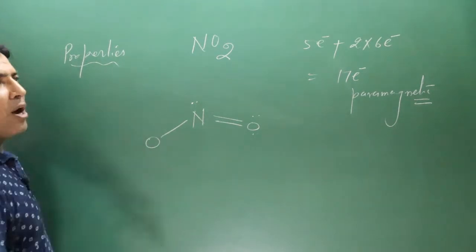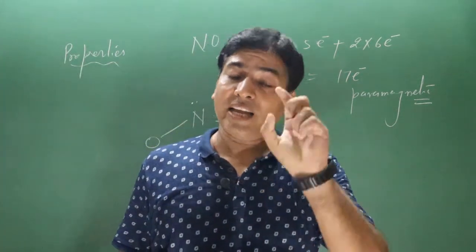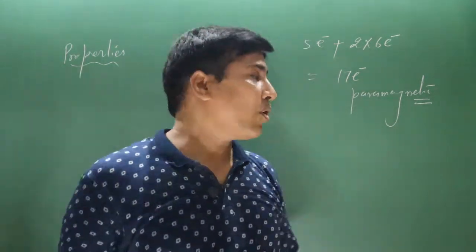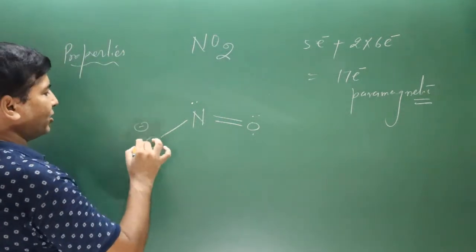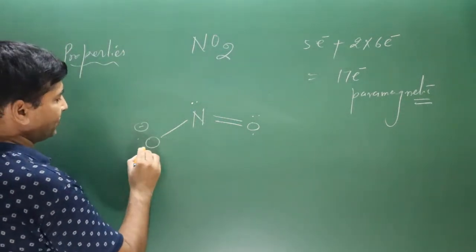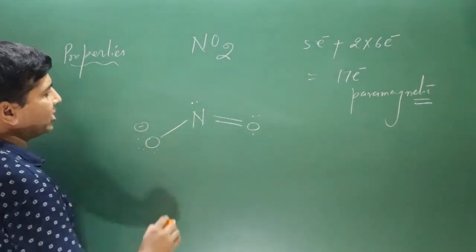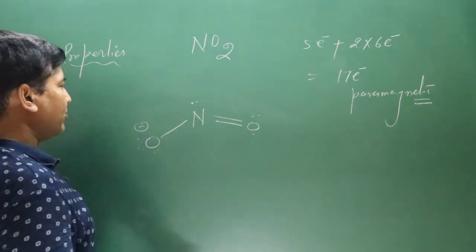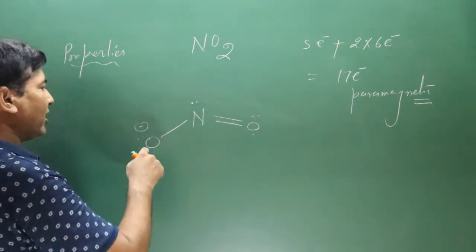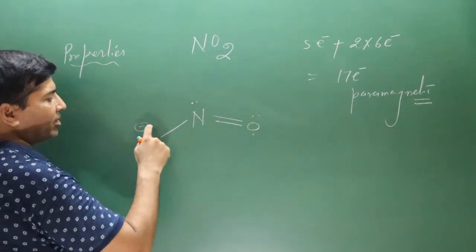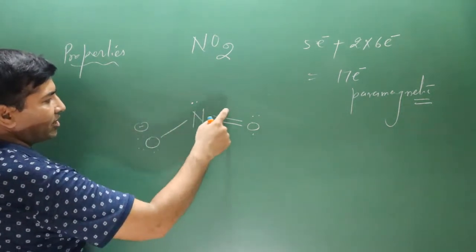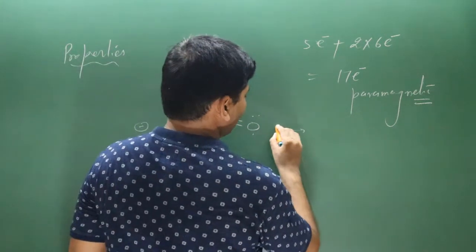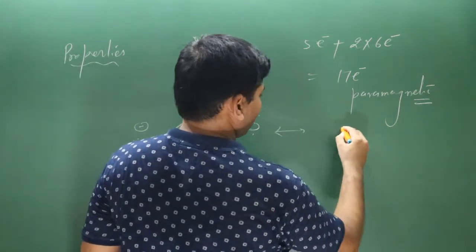If nitrogen is forming fewer than two bonds, it will always carry one negative charge. Resonance is present in NO2: double bond–single bond with a negative charge, and double bond–single bond with a negative charge on the other oxygen — these are the resonating structures.